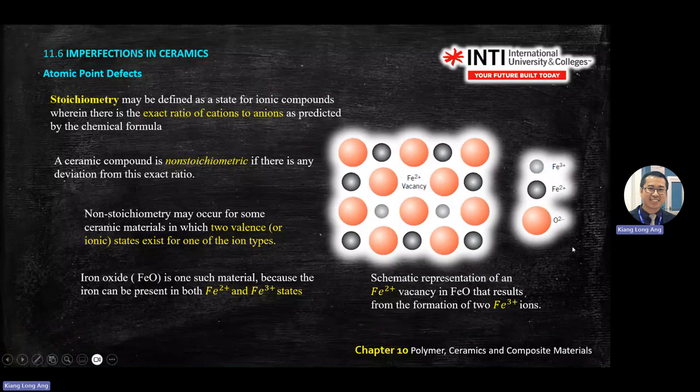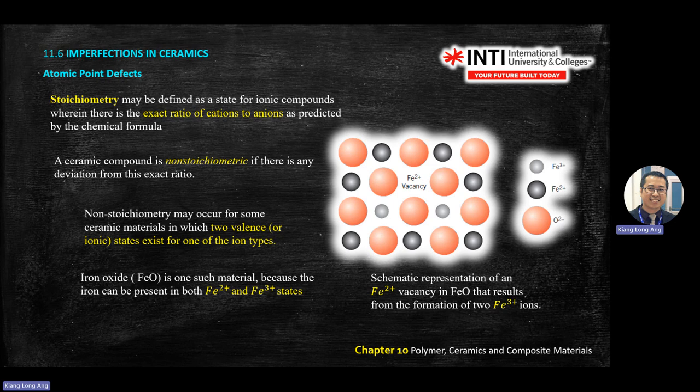We discussed stoichiometry — non-stoichiometric ceramics cannot reach stoichiometry because we have a different ratio, especially when you mix metals. For example, ferrum oxide: you have Fe²⁺ and Fe³⁺. Fe²⁺ is bigger and Fe³⁺ is smaller, and the oxide is bigger.